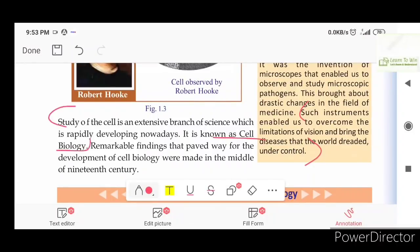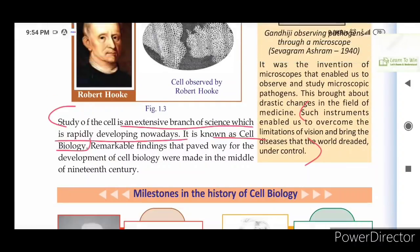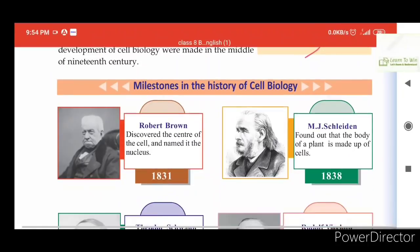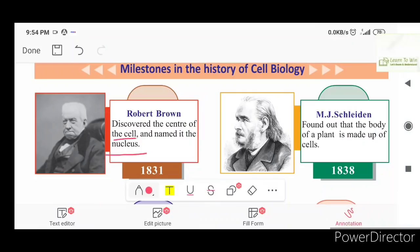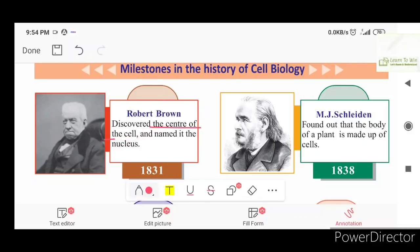The study of the cell is an extensive branch of science which is rapidly developing nowadays. It is known as cell biology. A milestone in the history of cell biology: in 1831, Robert Brown discovered the center of the cell and named it the Nucleus.